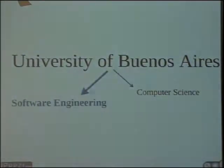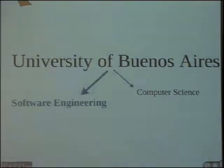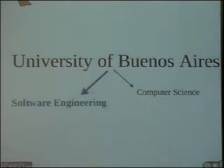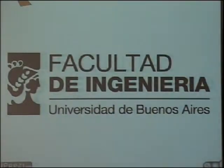Just to give an example: if you study computer science, you will have two or three subjects about software engineering. If you study software engineering, you will have about 15 subjects about software engineering. I don't know if you have these different tracks in your universities, but this is our case. I teach in the software engineering studies, in the engineering faculty.